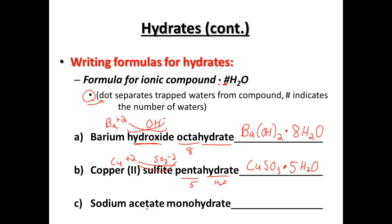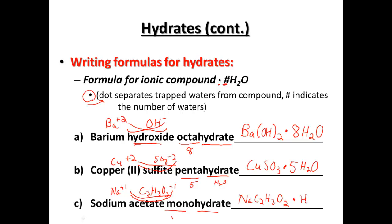Our last formula: sodium acetate monohydrate. Sodium is Na, which is a plus one. Acetate is one of our polyatomics — C2H3O2 with a minus one charge. When we criss-cross those, we end up with sodium C2H3O2 for acetate, and monohydrate. With monohydrate, we don't need to write the number one for mono. So it's just our dot separating one H2O from the rest of the compound: NaC2H3O2·H2O.